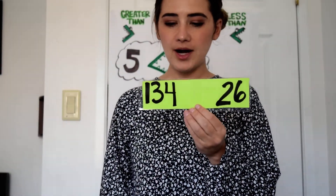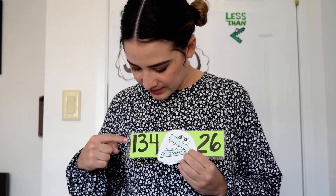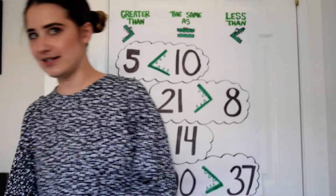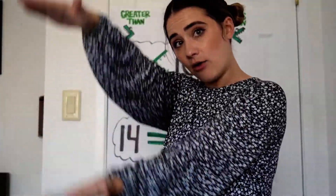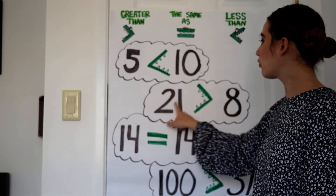We have one hundred and thirty-four and twenty-six. Which number is bigger? One hundred and thirty-four is bigger — much bigger. So our alligator is going to face the bigger number, and now it says one hundred thirty-four is greater than twenty-six. I'm going to give you some practice problems, and I want you to figure out which alligator goes in the number sentence. Remember that his mouth always needs to be facing the bigger number, and you're going to decide if a number is less than or greater than the other. Good luck, my friends.